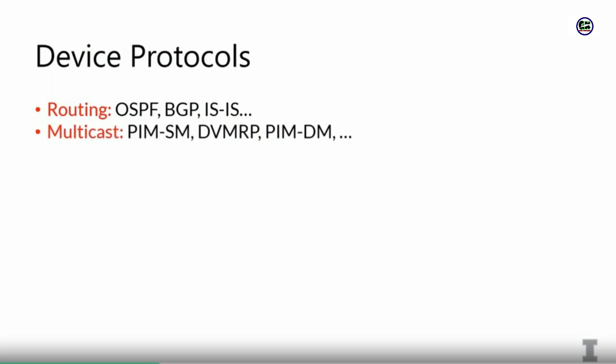If you want to do multicast, there are protocols that can set up multicast trees. If you have a bunch of traffic coming into your router and you want to disseminate it out, you can look at protocols like PIM-SM — that's a very commonly used one — as well as DVMRP and PIM-DM. For example, if you're disseminating video content to many different sources, instead of sending it individually to each source and wasting bandwidth, multicast lets you send out one copy and your routers will automatically create a peer-to-peer network to disseminate that traffic.